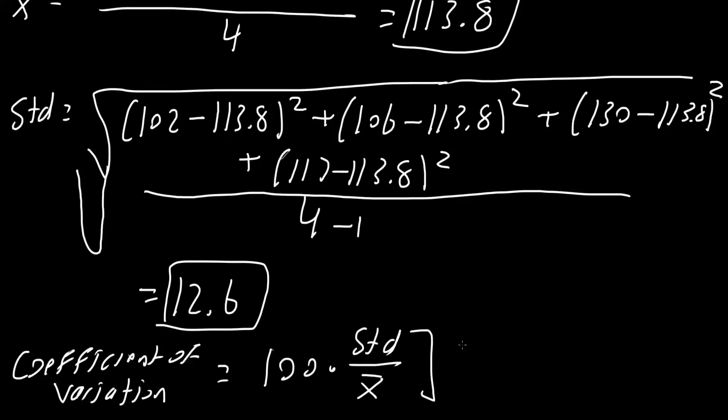So what we would get here is 100 times standard deviation was 12.6 divided by average, which was 113.8. This would give us 11.1%. And that's how we can get average, standard deviation, and coefficient of variation.